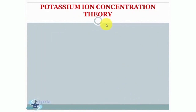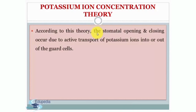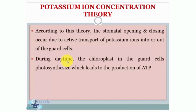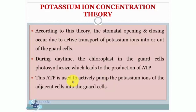Next we will discuss about the potassium ion concentration theory. According to this theory, stomata opening and closing occur due to active transport of potassium ions into or out of the guard cells. During daytime, the chloroplasts in the guard cells photosynthesize, leading to production of ATP, which is used to actively pump potassium ions from adjacent cells into the guard cells.